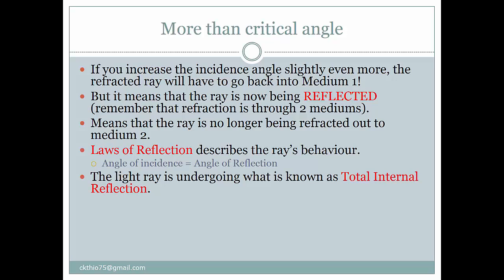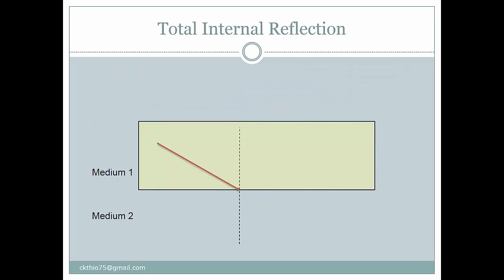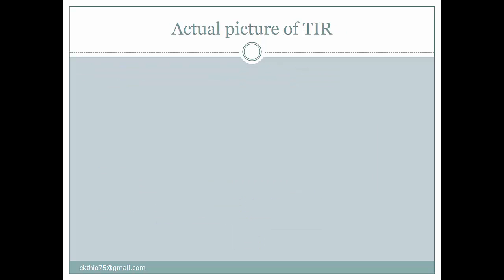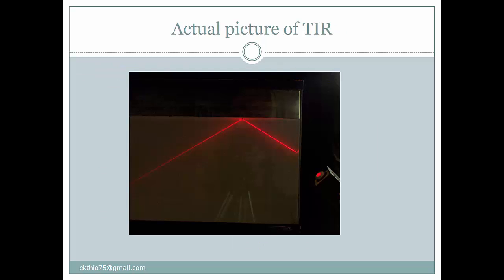The light ray is now undergoing what we call total internal reflection. When your light ray angle is greater than the critical angle, the angle of reflection will be equal to the angle of incidence. Notice that the light ray tries to go out of the water surface, but because the angle of incidence is greater than the critical angle, it undergoes total internal reflection.